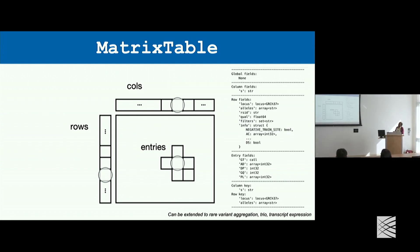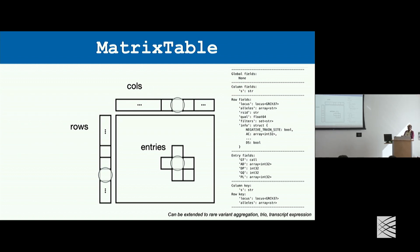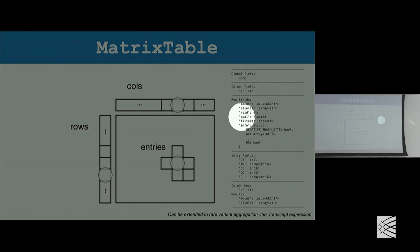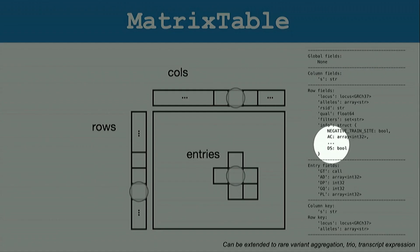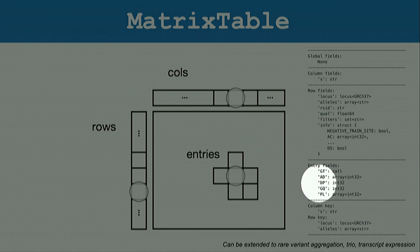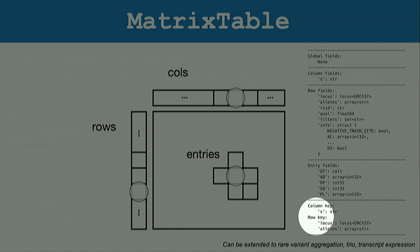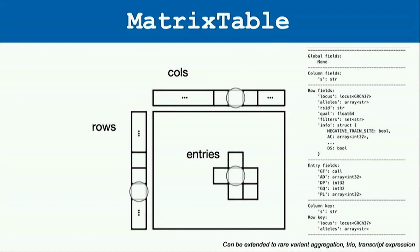To give a concrete example from our tutorial: after importing a VCF file, your row fields include locus, alleles, RSID, quality, filters, and info. Your entry fields include GT (genotype), depth, genotype quality, and PL (phred-like scores). Your column keys are sample IDs, and your row keys are locus and alleles.